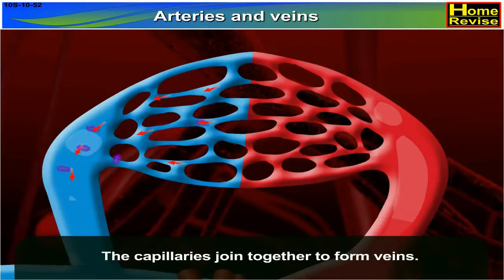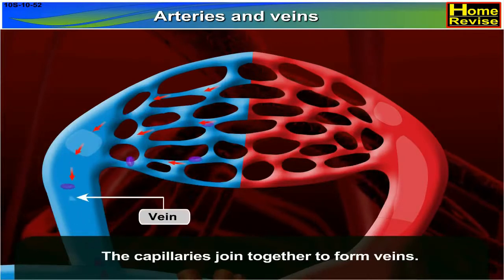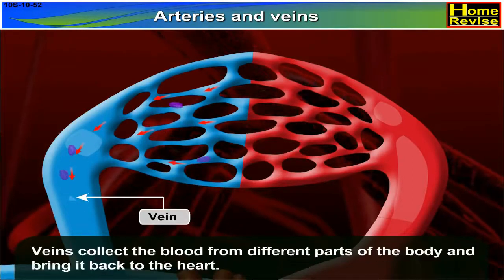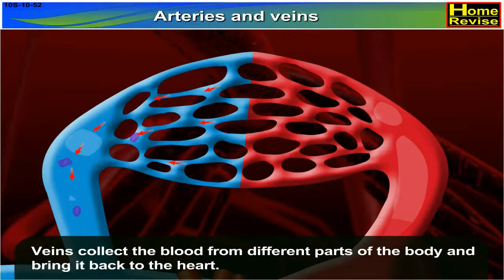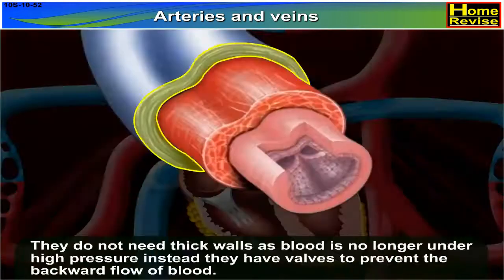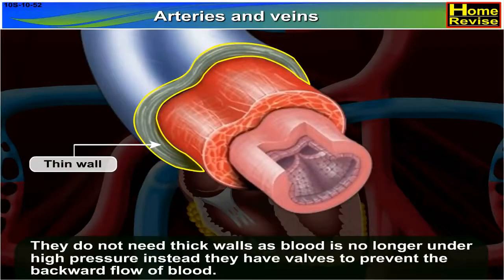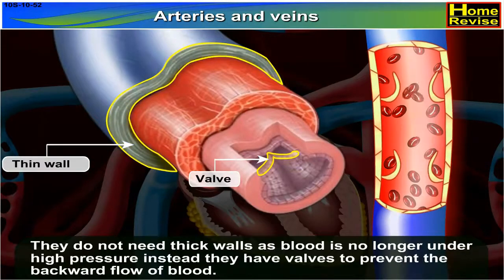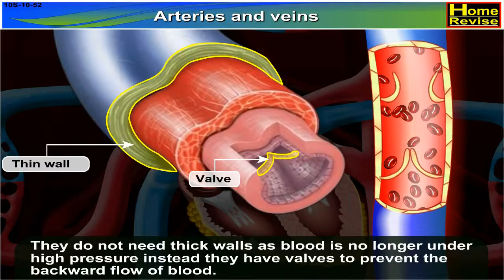The capillaries join together to form veins. Veins collect the blood from different parts of the body and bring it back to the heart. They do not need thick walls as blood is no longer under high pressure. Instead, they have valves to prevent the backward flow of blood.